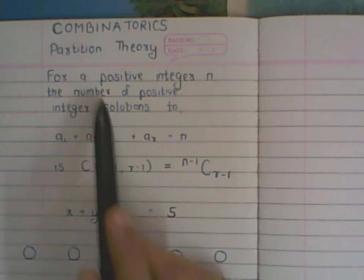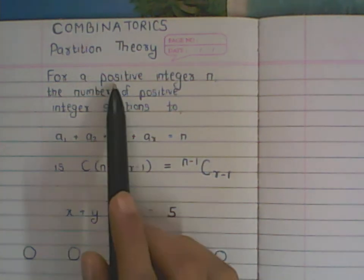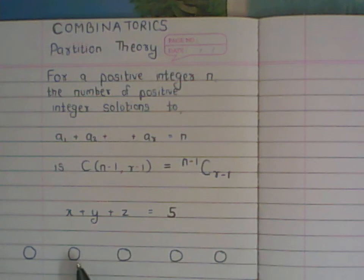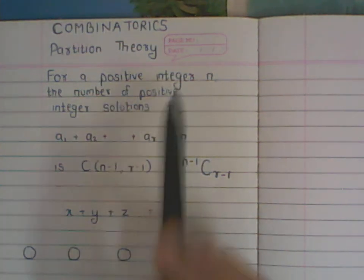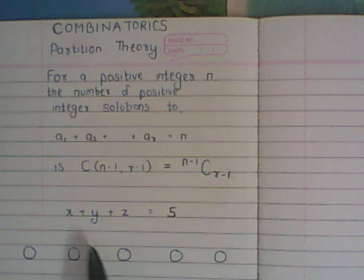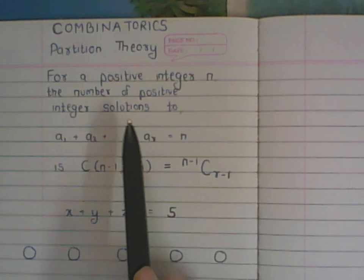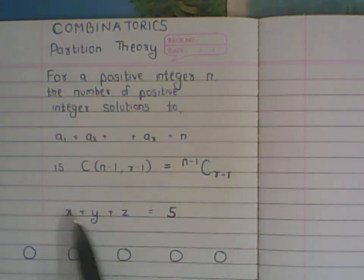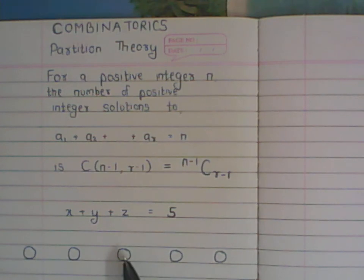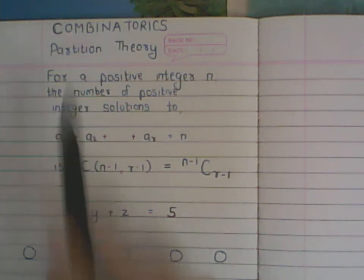The condition that each child gets at least one ball corresponds exactly to x, y, z being positive integers — if a child got no balls, that variable would be zero, which is not a positive integer. So finding the number of positive integer solutions to x+y+z=5 is equivalent to finding the number of ways to distribute five identical balls among three children such that each gets at least one.